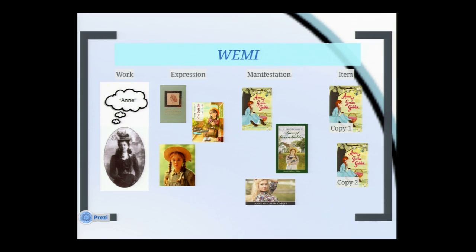When my colleague Stacy looked at this slide, she said she remembered having the book with the green border — she was talking about a particular manifestation of Anne of Green Gables. It's still the same text as the original printed expression, but printed by a different publisher. However, she read the item still on her bookshelf at home, and has not read either copy one or copy two of the items in the Munn Library's collection.